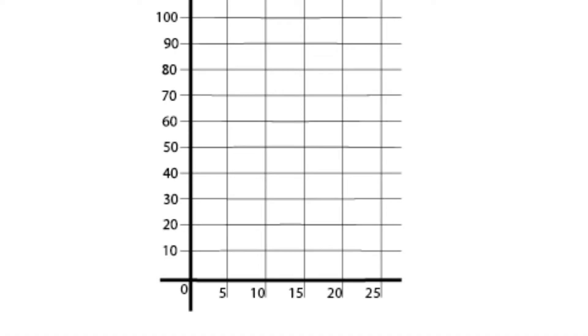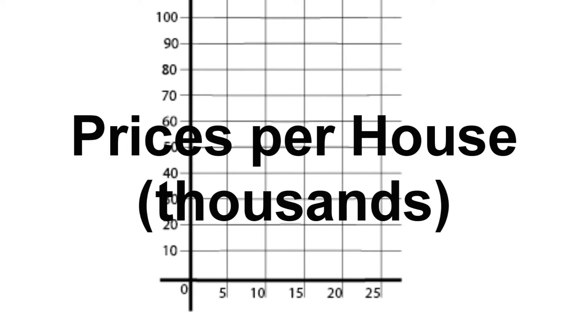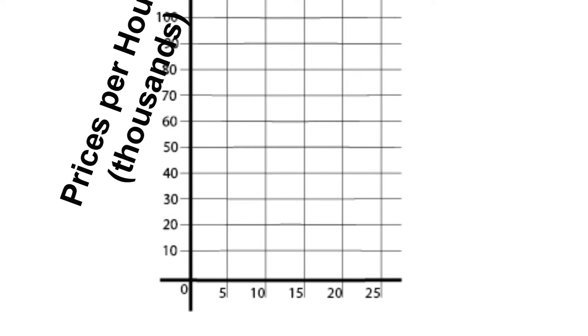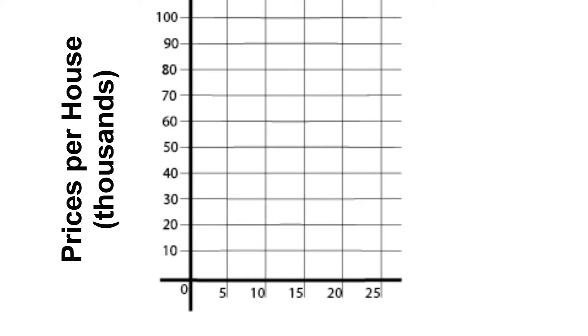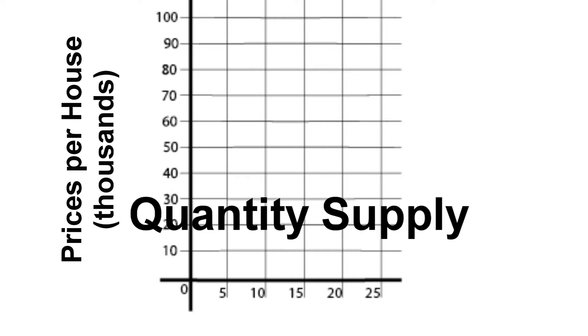On the right side of the graph, we'll plot the prices per house — these will be by the thousands. On the bottom of the graph, we'll write the quantity supplied. We'll plot these numbers by 5.